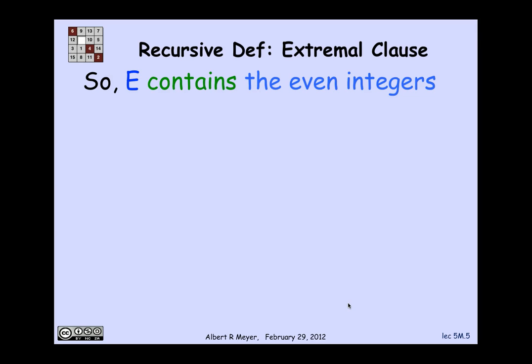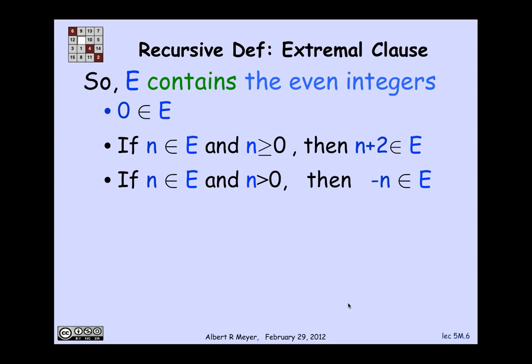So we've figured out that E contains the even numbers. Is there anything else in E? The answer is no. The reason is that an implicit part of the understanding of a definition like this is that the only way things can get into E is by being a base case or by being constructed from previously constructed elements by applying the constructor rules.